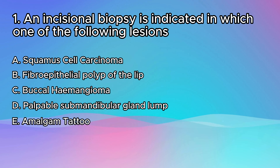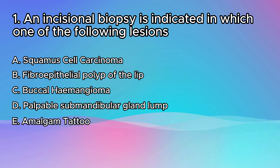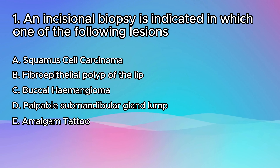The first thing to consider here is what is the difference between an incisional and an excisional biopsy. An excisional biopsy is where we remove everything — all of the lesion. An incisional biopsy is where we remove one piece of the lesion. Running through the options: an amalgam tattoo doesn't need any treatment, the submandibular gland lump would require a needle aspiration rather than a biopsy, and a buccal hemangioma shouldn't be biopsied.